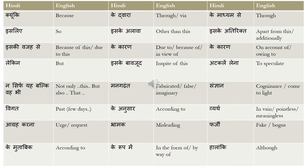The first word is 'kyunki', which means 'because'. 'Ke dwara' is translated as 'through' or 'via'. 'Ke madhyam se' is also translated as 'through'. So you can use either 'ke dwara' or 'ke madhyam se' based on whichever you can recall at that point in time, or based on the context.